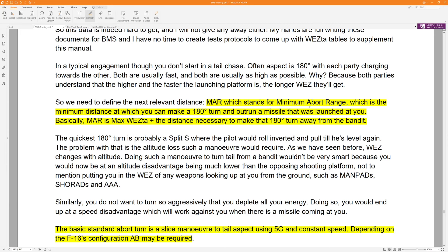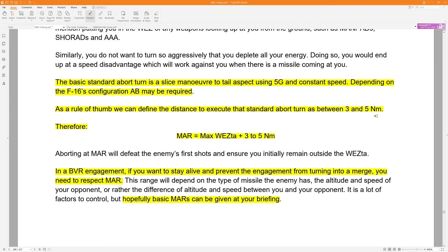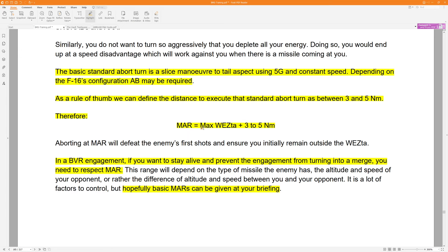Let's talk about the minimum abort range real quick. That's the distance at which you can make a 180 degree turn and outrun a missile that was launched at you. So basically the MAR is max WEZ tail aspect, plus the distance necessary to make that turn and go cold away from the bandit. Obviously, you'll continue to go this direction as you turn around before you're able to go back this direction. As a rule of thumb, we can define the distance to execute the standard abort turn as between 3 and 5 nautical miles. So therefore, minimum abort range in any given scenario is the maximum weapon engagement zone tail aspect of the bandit's weapon, plus 3 to 5 nautical miles.